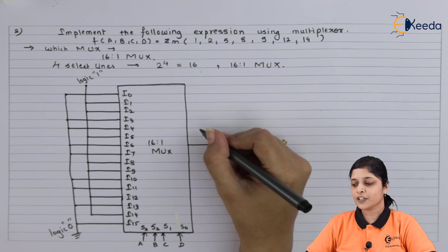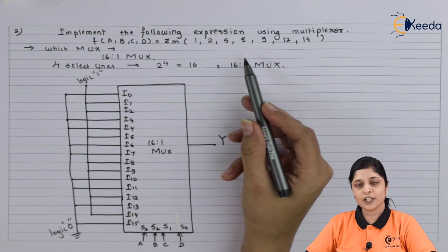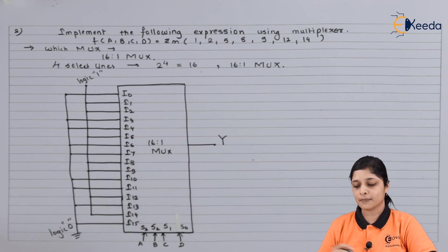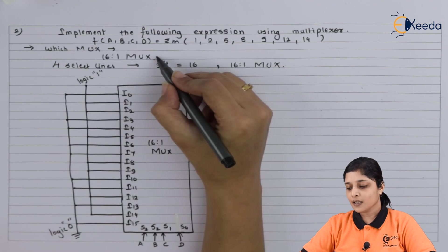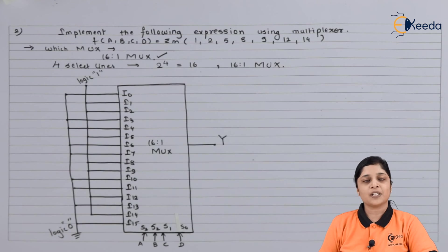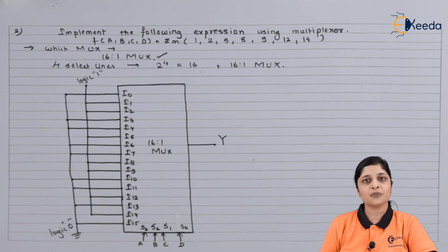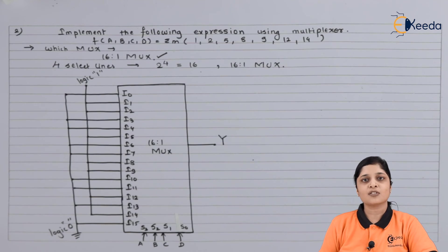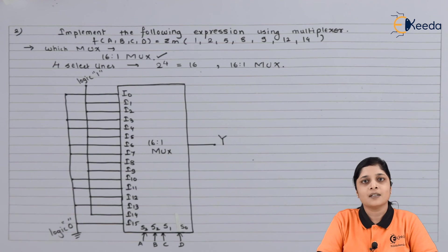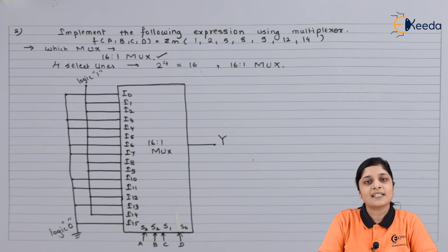So we have drawn the implementation of the given expression using a multiplexer. The main thing is you have to choose which multiplexer to use, and according to that you design. This is all about the numerical on multiplexers. Thank you for watching this video — stay tuned with Ikeda and subscribe to Ikeda.